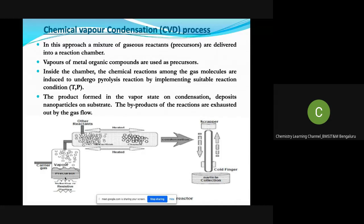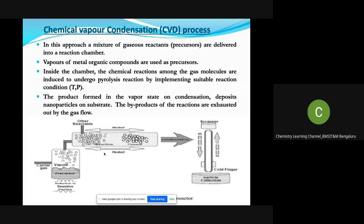What is the role of the carrier gas? Carrier gas is like a vehicle — it is taking the precursor gases along with it and moving them into the reaction chamber, helping the precursor gases to go and sit on the surface of the substrate.